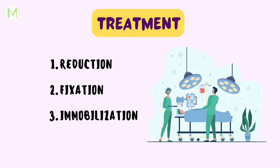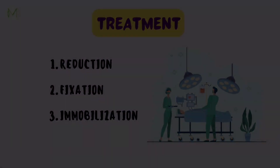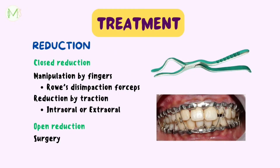The treatment principles for LeFort III fracture are reduction, fixation, and immobilization. Reduction refers to reestablishment of form, function, and occlusion. Reduction can be closed or open type. In closed type reduction, alignment of fractured fragments is done without visualizing the fractured fragment, which can be done either through manipulation using forceps or by intraoral or extraoral traction using arch bars or elastics. In open reduction, fractured fragments are reduced by surgical approaches.